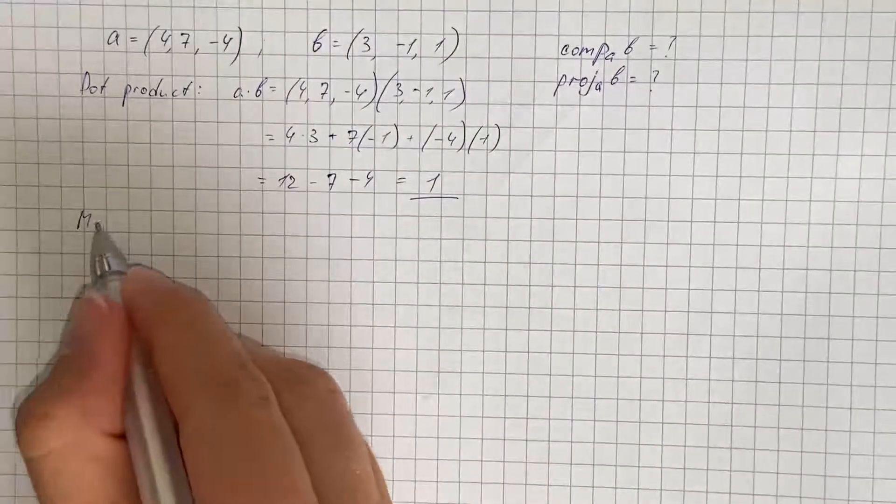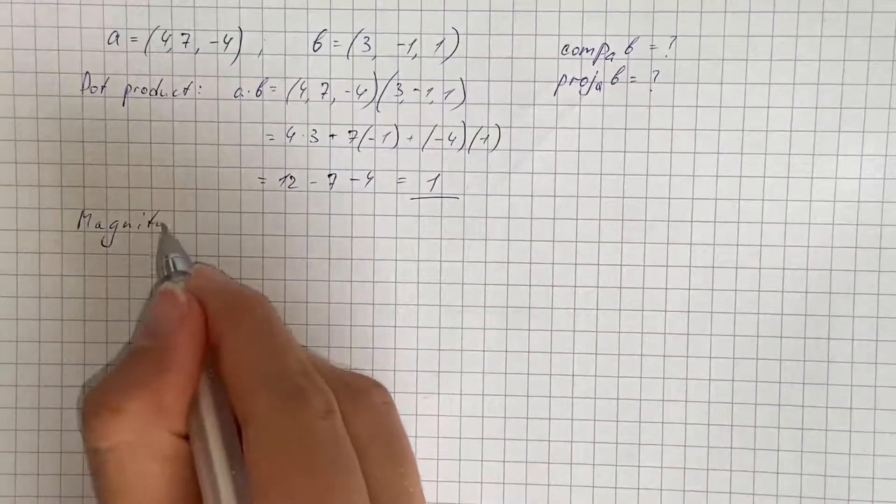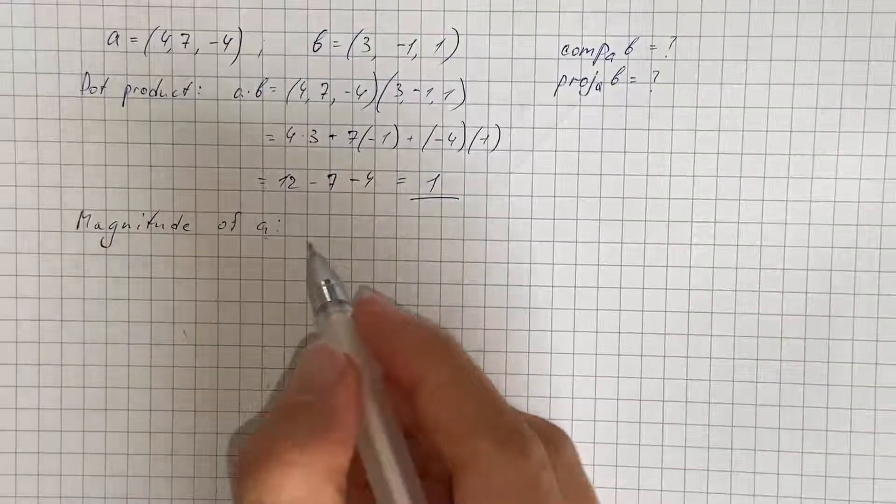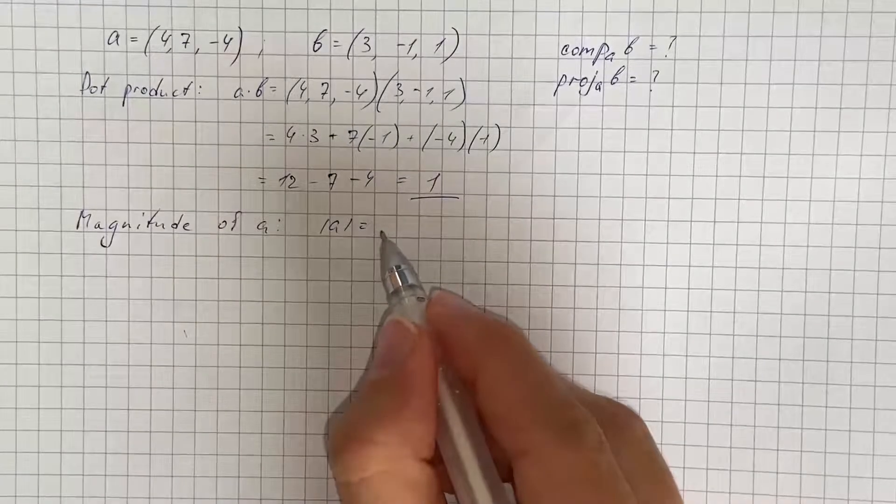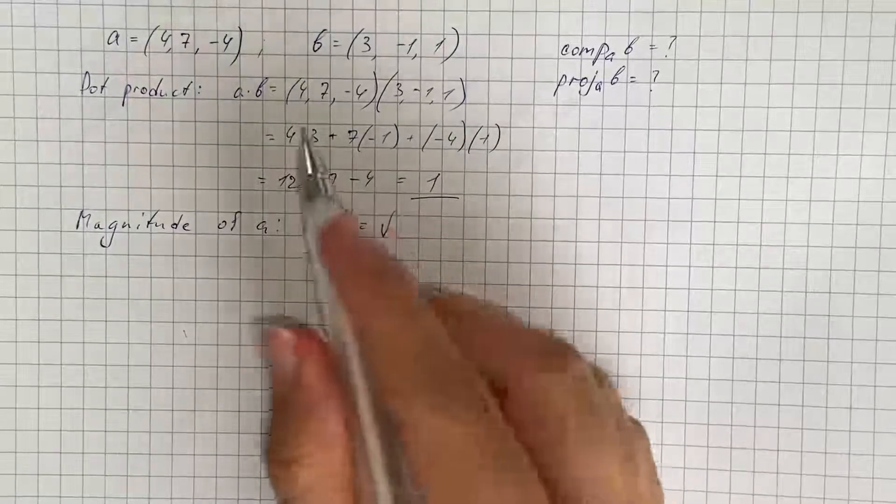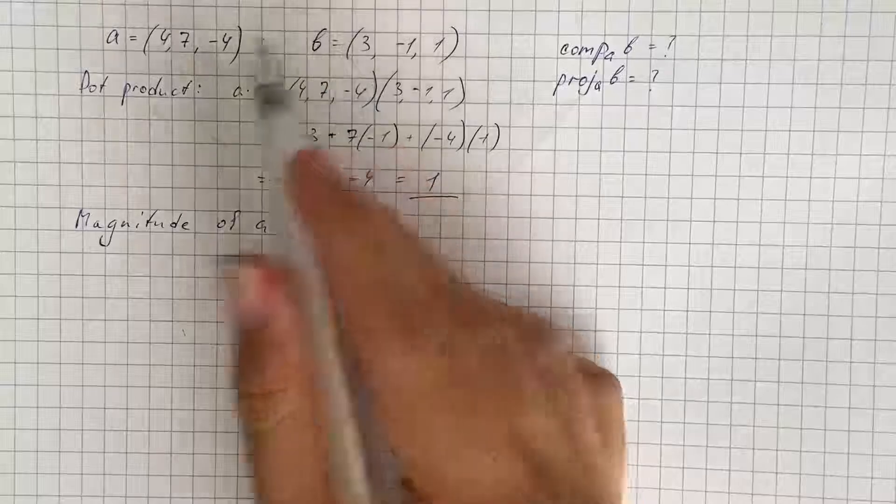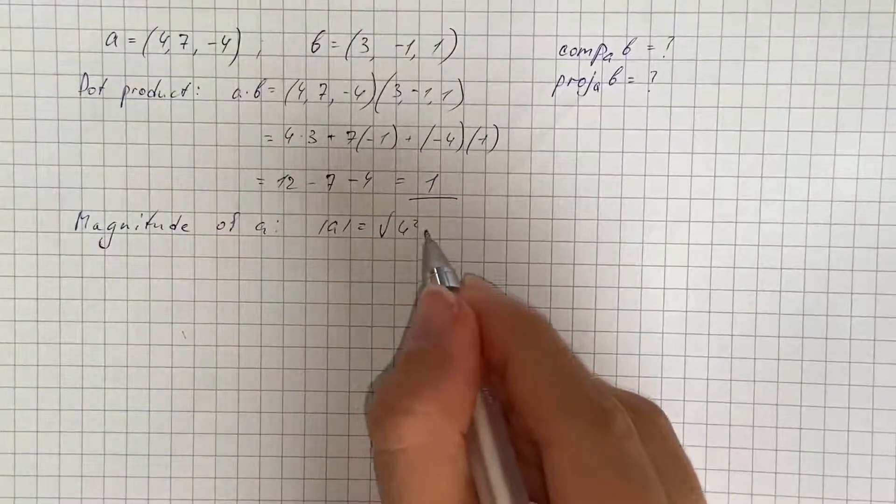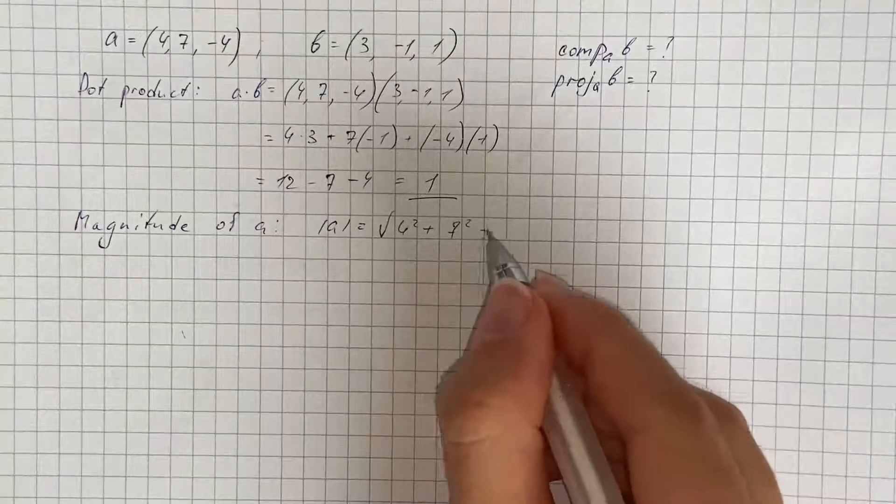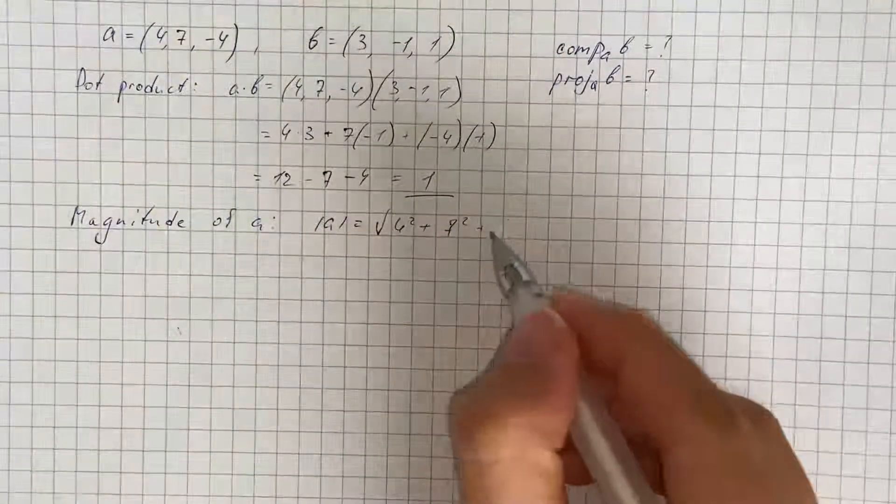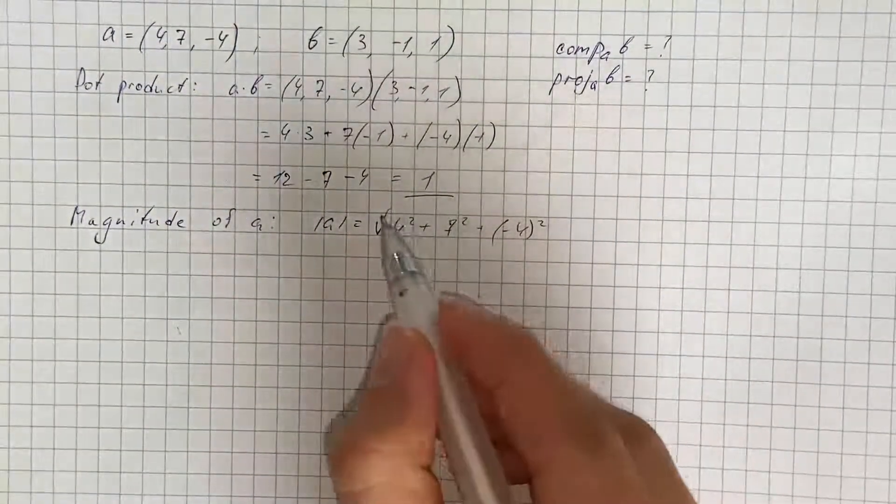Now we're going to find the magnitude of a. That's going to be square root of x coordinate squared, so 4 squared plus y coordinate squared, 7 squared, plus z coordinate squared, negative 4 squared.